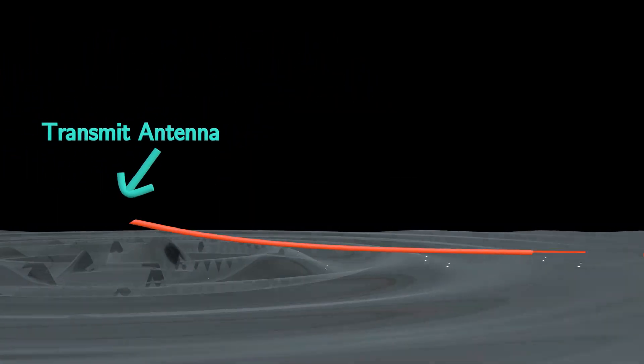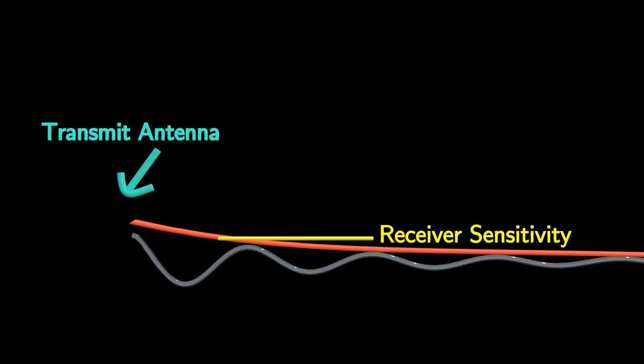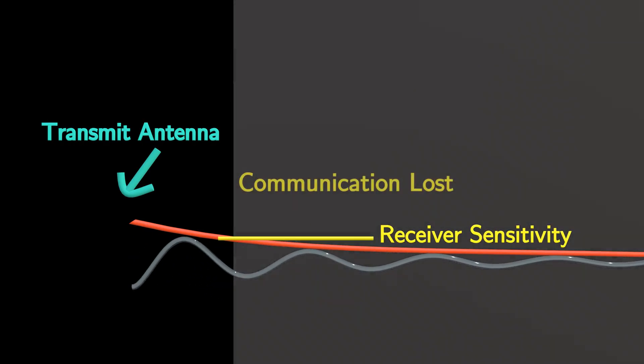As these waves travel further, their amplitude naturally diminishes. If the amplitude drops below the receiver's sensitivity threshold, communication is lost.